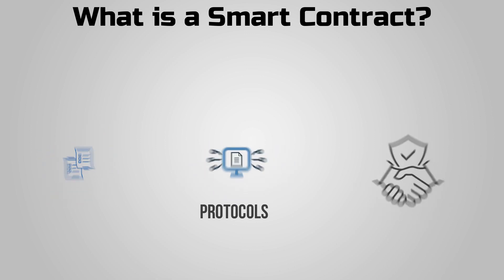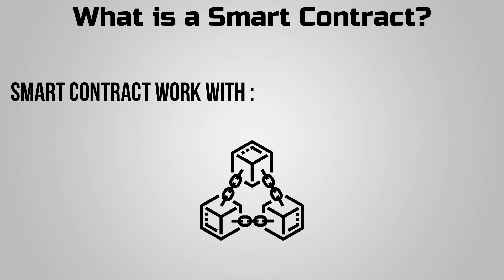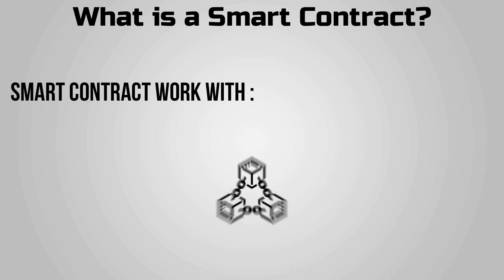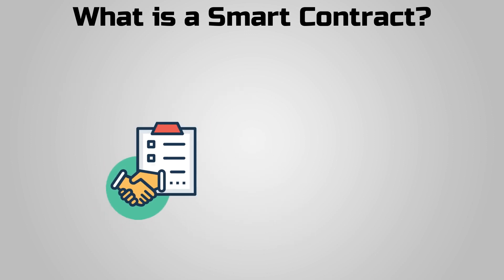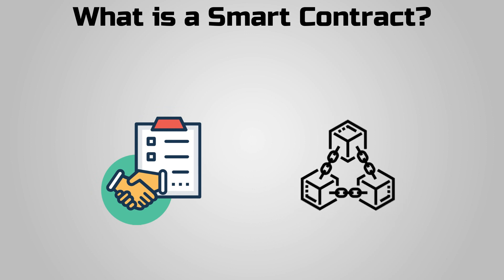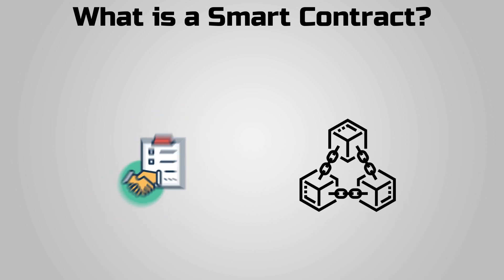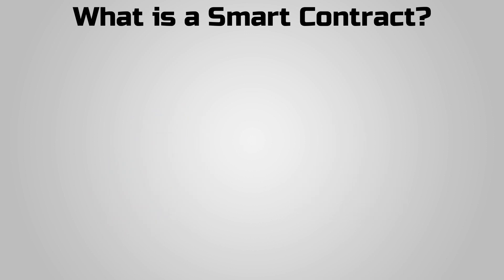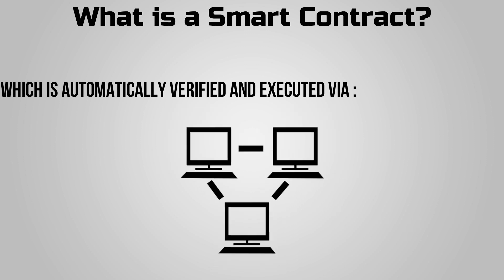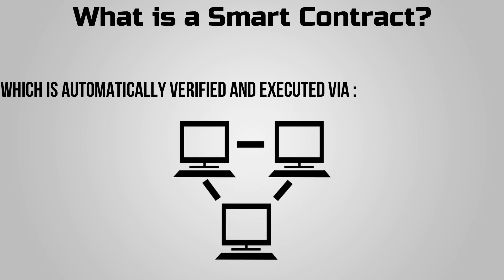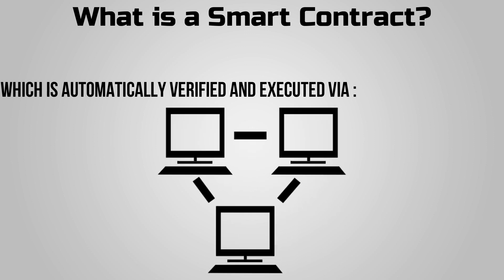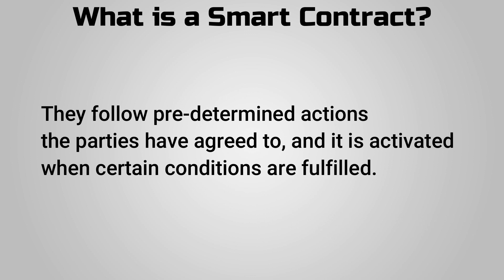Smart contracts work with blockchain technology, making them traceable and permanent. A smart contract is an agreement between two parties encoded on a blockchain, which is automatically executed and verified via a computer network. They follow a set of predetermined actions the parties have agreed to, and are activated when certain conditions are fulfilled.